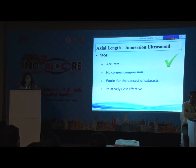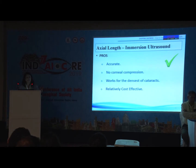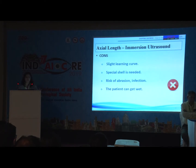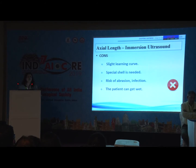Immersion ultrasound is more accurate, with no risk of corneal compression. It works for dense cataracts and is relatively cost-effective — you just need to add a Prager's shell to your basic ultrasonic machine. There is a slight learning curve and a special shell is needed. The patient may get wet, but that is not very disadvantageous compared to the advantages of immersion ultrasound.